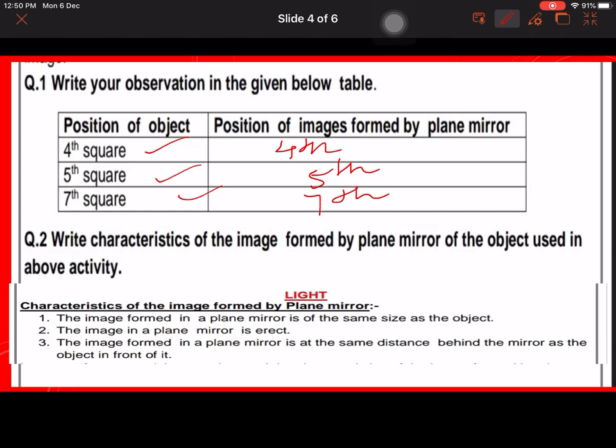Characteristics of image formed by plane mirror of the object used in above activity. In the above activity we use this characteristic: the image formed in a plane mirror is at the same distance behind the mirror as the object in front. So you can write this 3rd one and circle that the main objective used in the above activity.